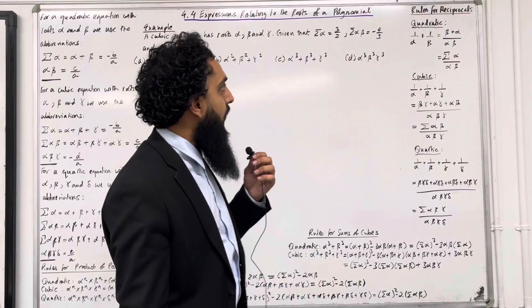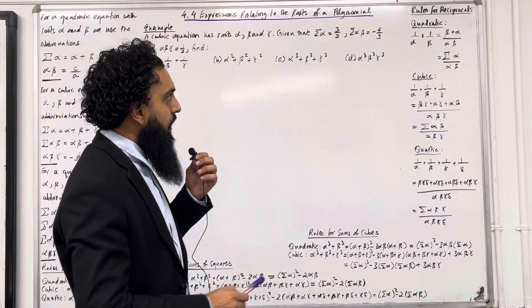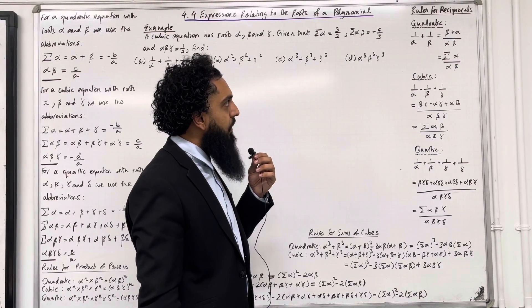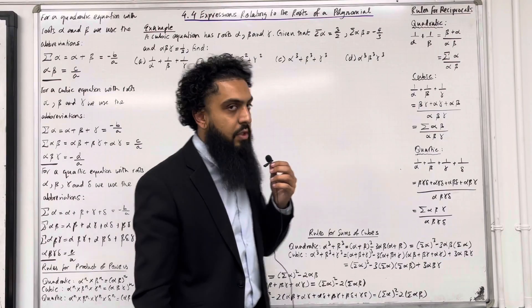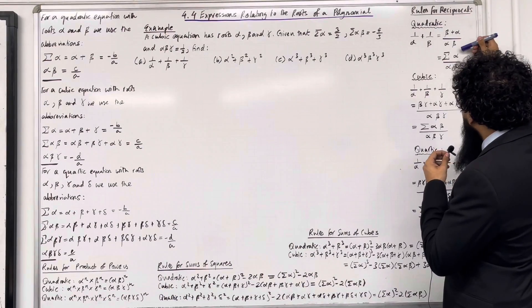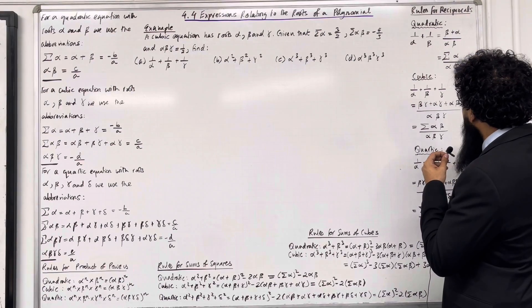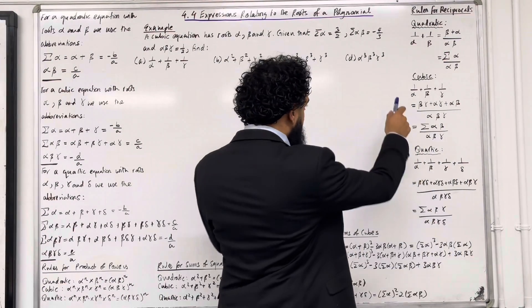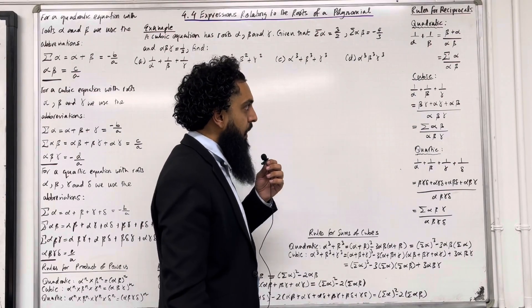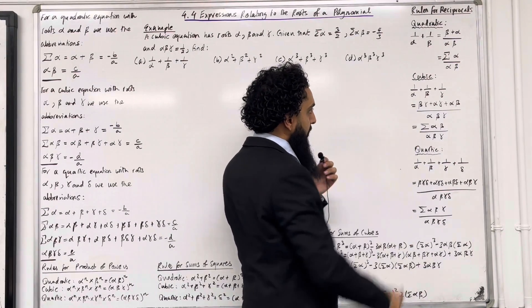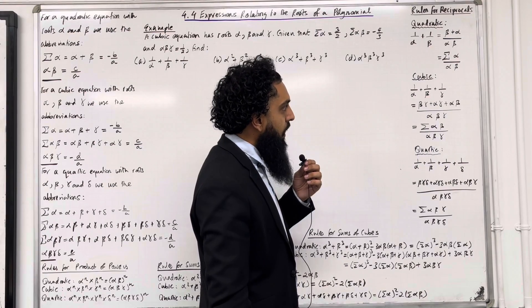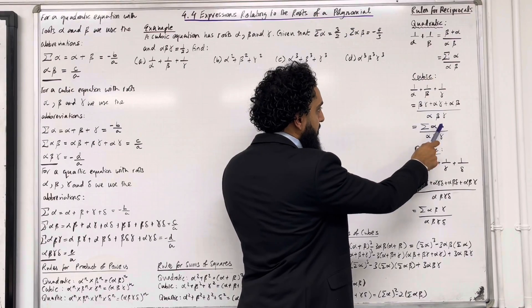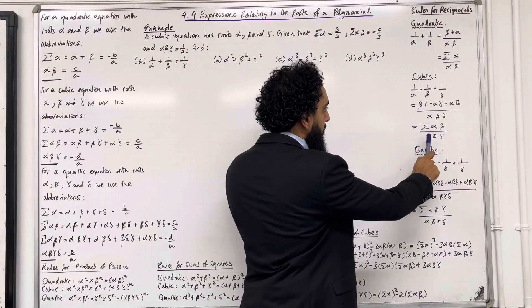Finally, we're going to look at rules for reciprocals. For a quadratic, 1 over alpha plus 1 over beta is equal to (beta plus alpha) over alpha beta. The numerator is the same as writing sum of alpha, over alpha beta. For a cubic, 1 over alpha plus 1 over beta plus 1 over gamma is equal to (beta gamma plus alpha gamma plus alpha beta) all over alpha beta gamma. The numerator is the same as writing sum of alpha beta over alpha beta gamma.